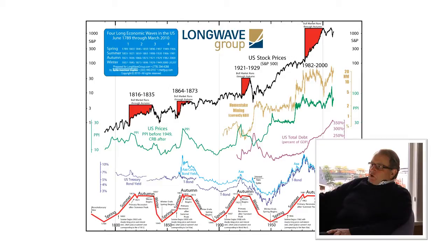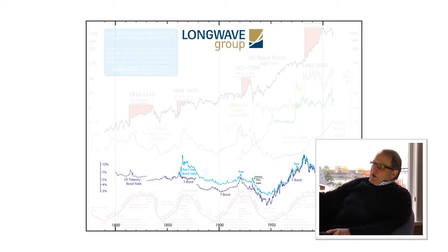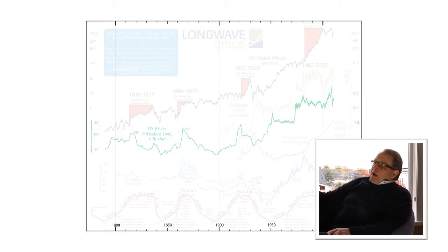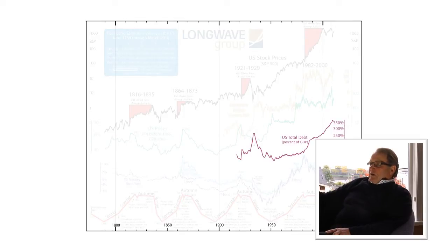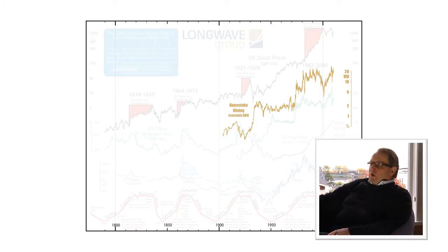On this chart here we've got interest rates going all the way back to about 1800, then we've got prices — initially the producer price index and then the commodity price index thereafter — and then we've got US total debt going back to about 1920 here in purple.